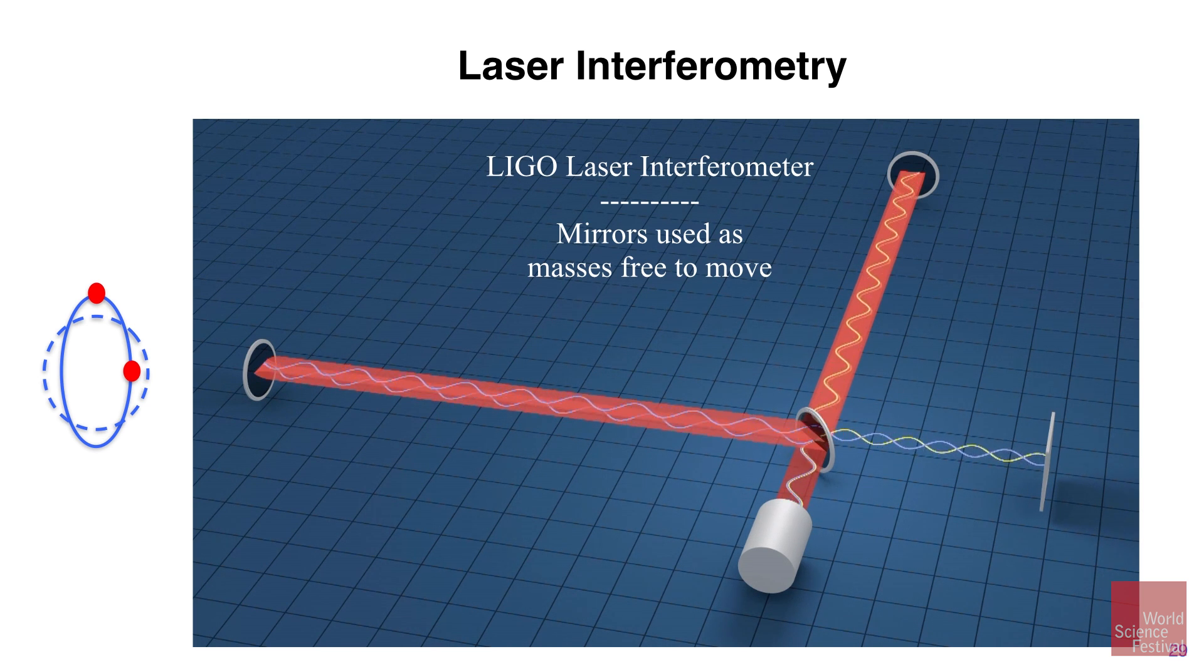So how small is this change that we want to measure? That's the technique, but how small is it? We ultimately want to go to something like 10 to the minus 19 meters. We talked about 10 to the minus 18, but 10 to the minus 19 is kind of our goal.